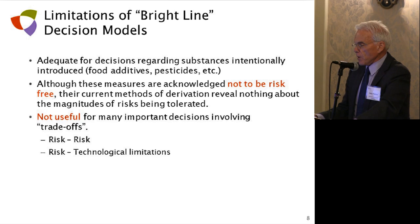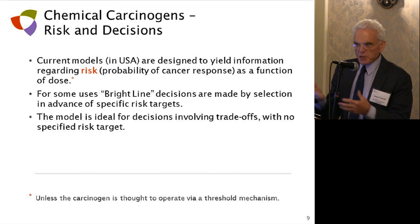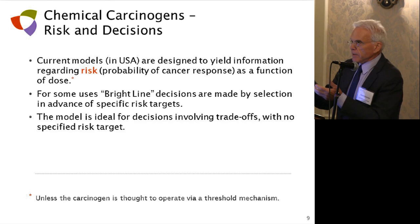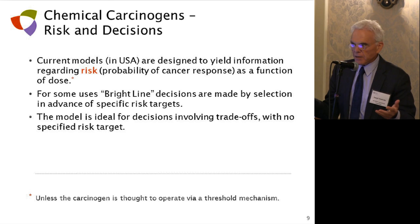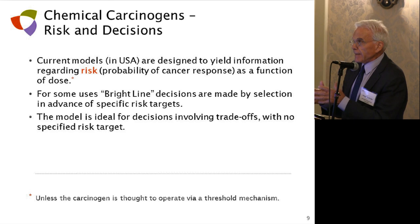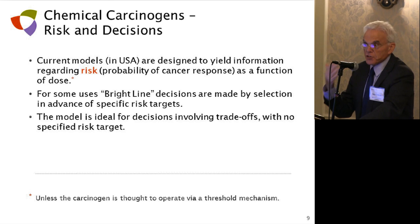The carcinogen model is not a bright line model. Low-dose extrapolation and models for cancer risk assessment describe risk as a function of exposure. You can set some very low risk level — say, 10 to the minus 6 lifetime risk — as a bright line for some decisions about carcinogens. But there are many decisions where a range of very low risk would be satisfactory, making these models ideal for the kind of decision-making I'm describing that involves possible trade-offs.